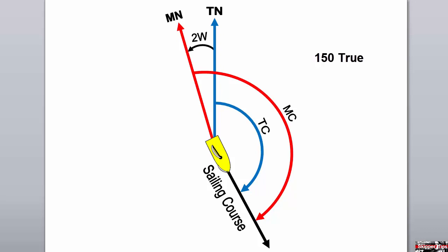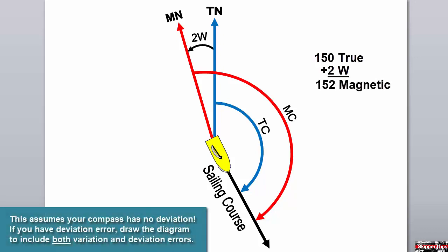You can see right away that the magnetic course is greater than the true course. This means we need to add our variation of 2 degrees west. The course to steer will be 152 degrees magnetic.